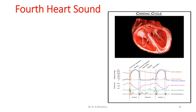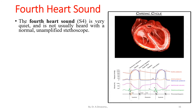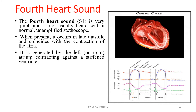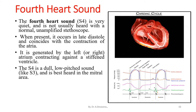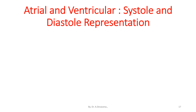The fourth heart sound, S4, is very quiet and is not usually heard with a normal amplified stethoscope. When present, it occurs in late diastole and coincides with the contraction of the atria. It is generated by the left or right atrium contracting against a stiffened ventricle. S4 is a dull, low-pitched sound like S3, best heard in the mitral area, and is sometimes referred to as an atrial gallop.